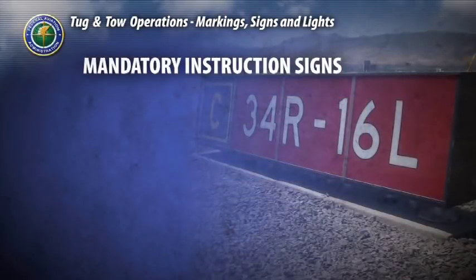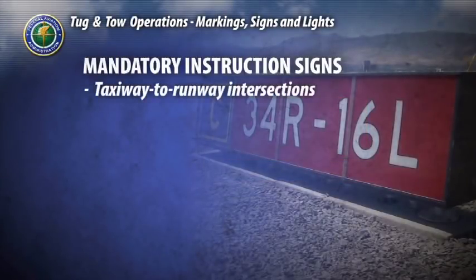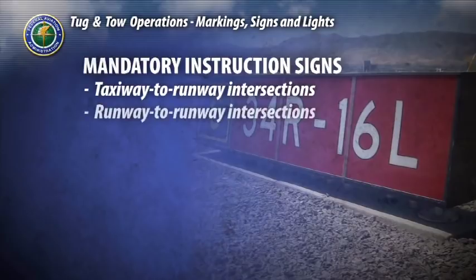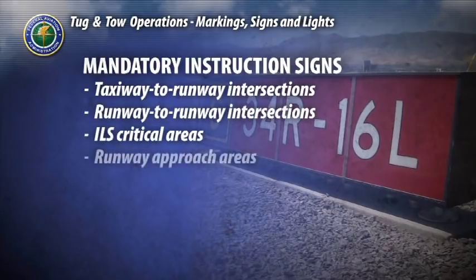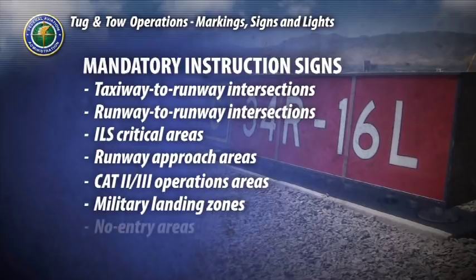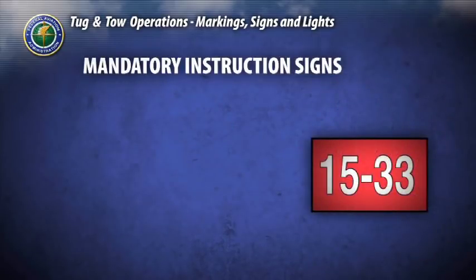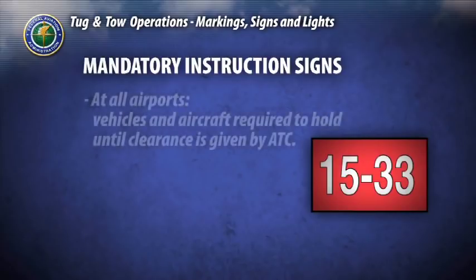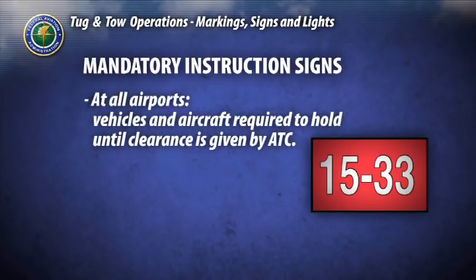Mandatory instruction signs are used to denote taxiway to runway intersections, runway to runway intersections, ILS critical areas, runway approach areas, CAT 2 and CAT 3 operation areas, military landing zones, and no entry areas. These signs have white inscriptions on a red background outlined in black. At all airports, vehicles and aircraft are required to hold at these signs until clearance is given by air traffic control.